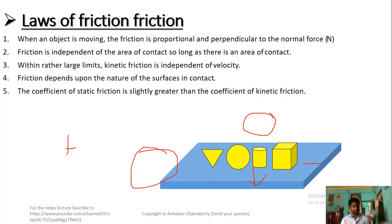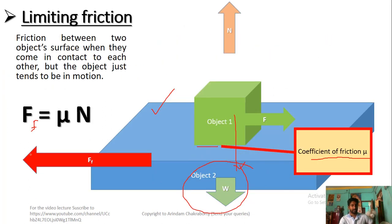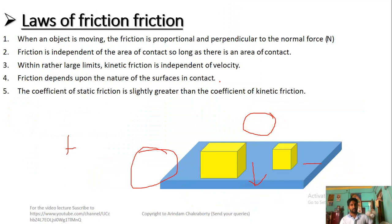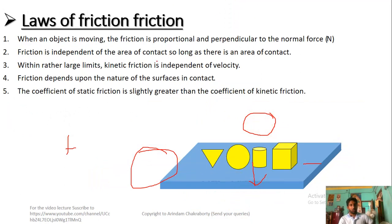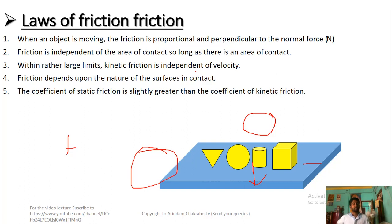Third law: friction is independent of velocity under normal conditions. Since force equals mass times acceleration, and acceleration is rate of change of velocity, velocity matters only at larger limits. In kinetic friction — that is, motion friction — velocity does play a role, whereas for static friction the body is at rest. We will study static friction and kinetic friction in more detail in the next class.